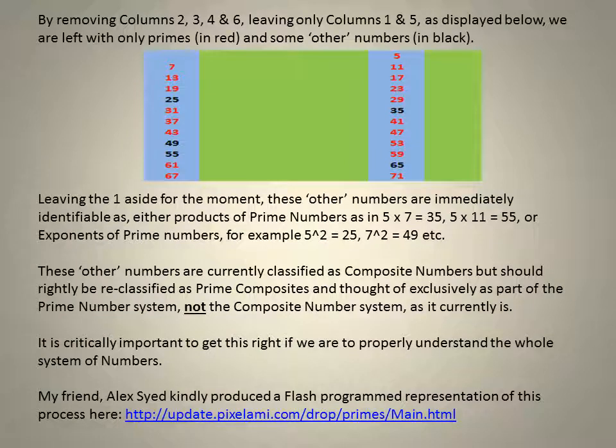By removing columns 2, 3, 4 and 6, leaving only columns 1 and 5 as displayed below, we are left with only primes in red and some other numbers in black.